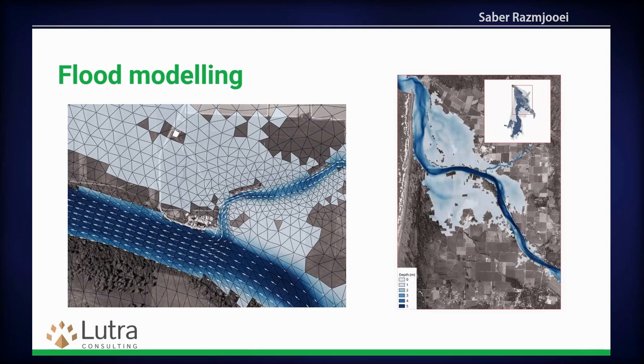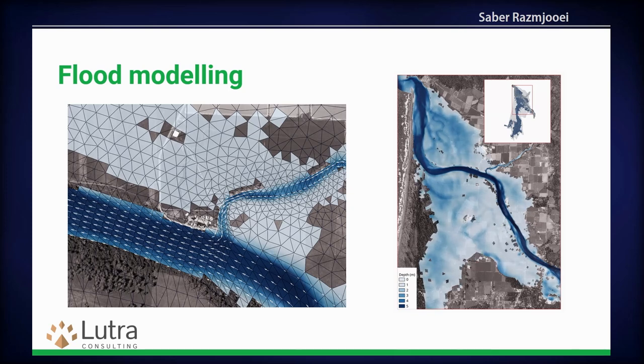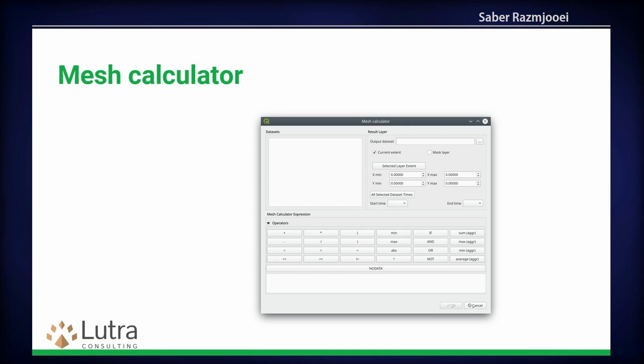Here are some examples of flood data. In addition, we have a mesh calculator. Similar to the raster calculator, you can do all sorts of calculations with mesh. It also has aggregate functions — let's say you have temperature data for all of Europe and you want to calculate the maximum aggregate for Florence for July. You can do max aggregate and apply a spatial filter, so it does both temporal and spatial filtering to give you aggregate functions.